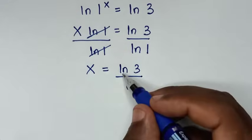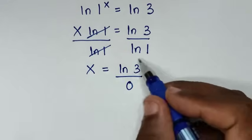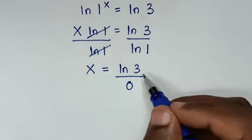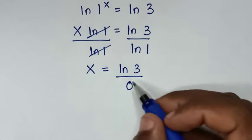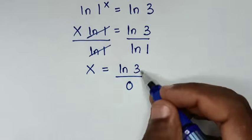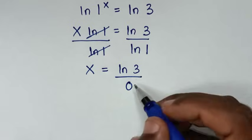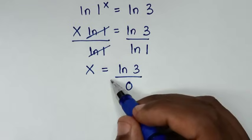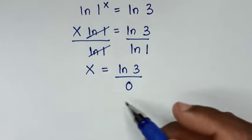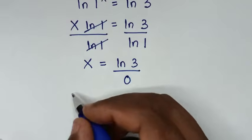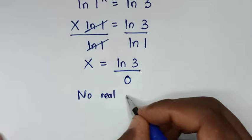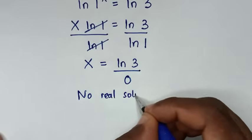Now, ln of 3 is approximately 1 point something — a nonzero value. So any number divided by 0 is undefined. Therefore, there is no real solution for x in this problem, so we write: no real solution.